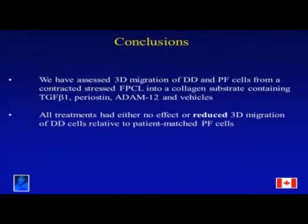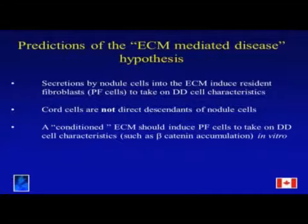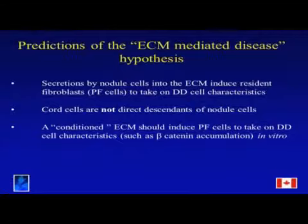That doesn't really support the cell migration hypothesis, so we came up with another one — the ECM-mediated disease hypothesis. You start off with the same nodule, but instead of cells migrating along the fascia, they secrete molecules into the ECM. Those molecules stimulate the adjacent phenotypically normal palmar fascia cells to undergo differentiation into Dupuytren's disease cells, forming another nodule, and then another, spreading through the fascia that way — and then contracting the cord. A key consequence is that cord cells are therefore not direct descendants of nodule cells.